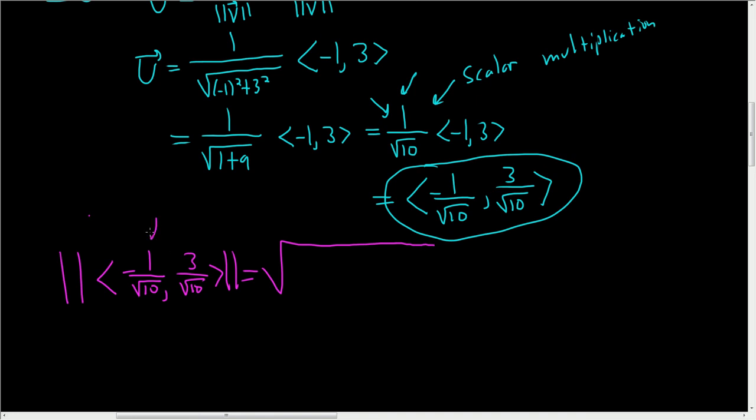And you just take this piece here and you square it. So negative 1 over the square root of 10 squared plus 3 over the square root of 10 squared.